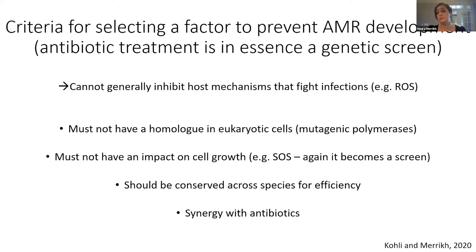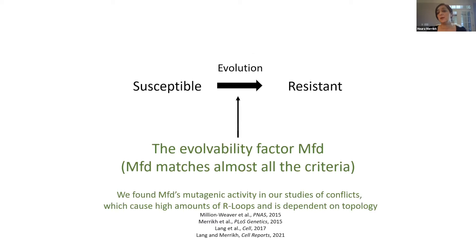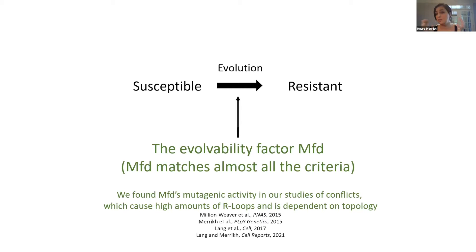We came to the evolvability factor MFD. MFD actually matches almost all of these criteria, if not all. The way we came to this was through our studies of conflicts between DNA replication and transcription. What we found — and this is really interesting based on the previous talks — is that over the past eight years or so, we found that MFD increases mutations during conflicts, that PCRA is involved also during conflicts, and that these conflicts lead to R-loop formation, which we recently published is actually dependent on topology.